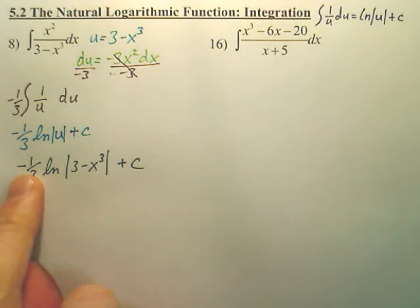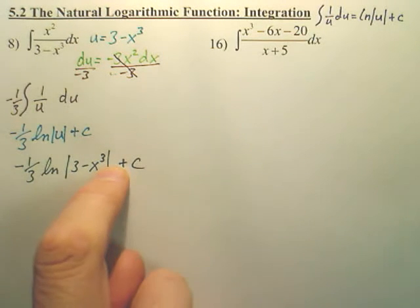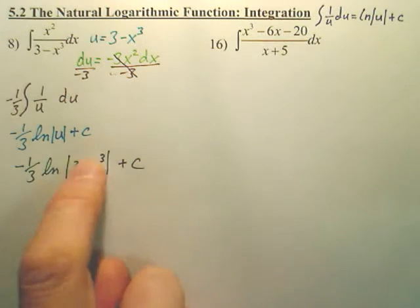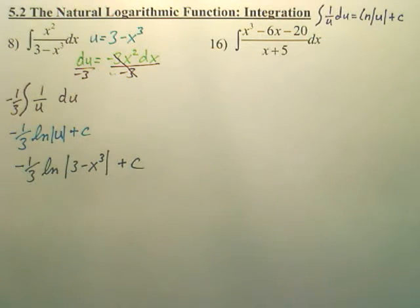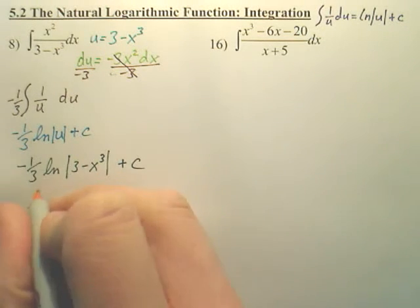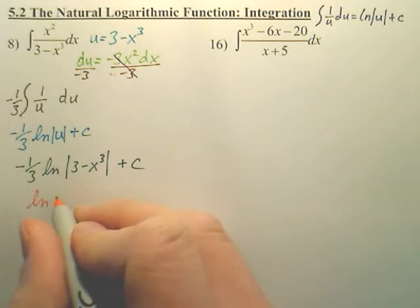Could you also take this negative one-third power, one-third, and bring it up and make it a power over this thing? Yes. Which would end up, you could write it like this, which I probably wouldn't, but just so you know, in case it's like that,